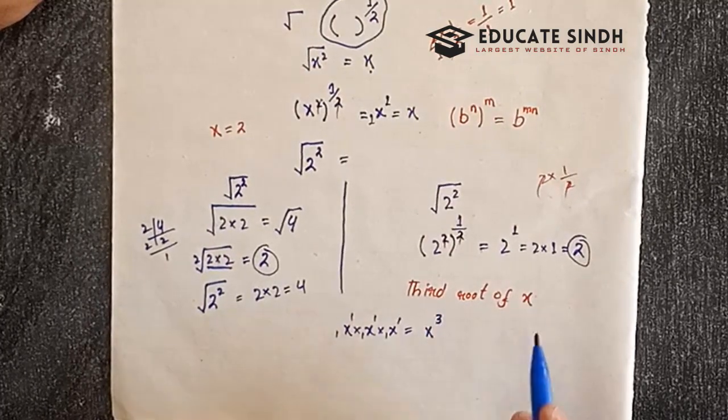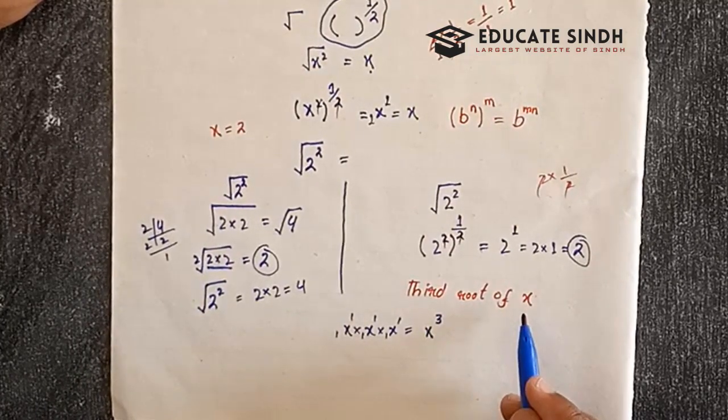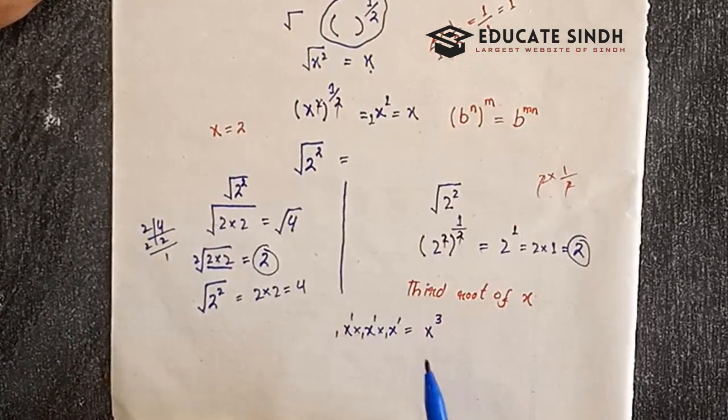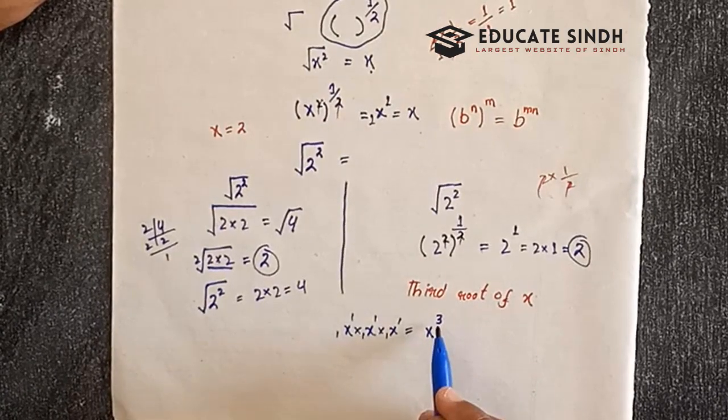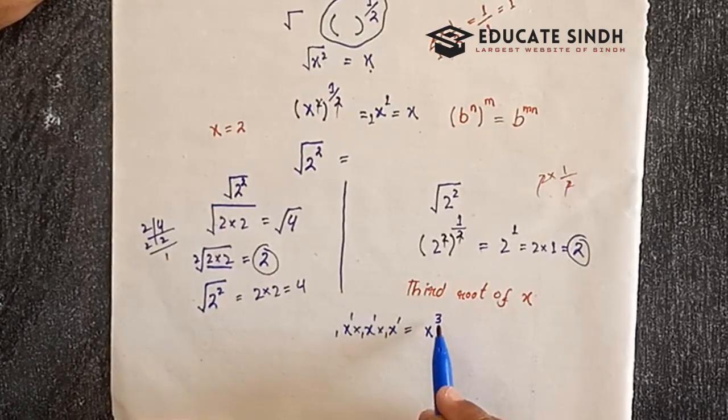Find the 3rd root of any number. Any number x cube: 2, 3.